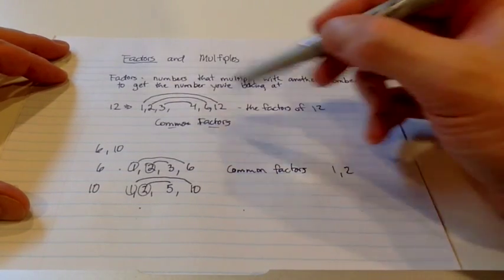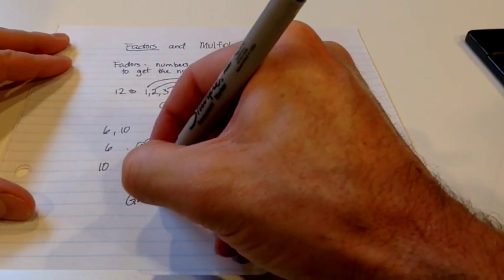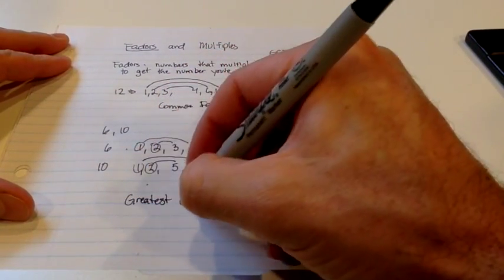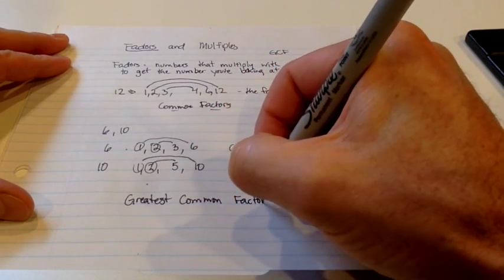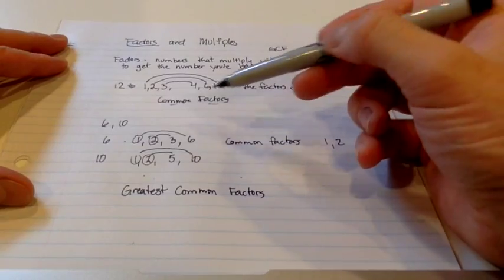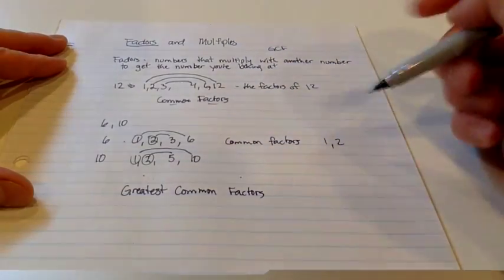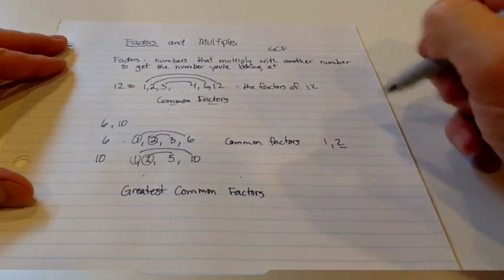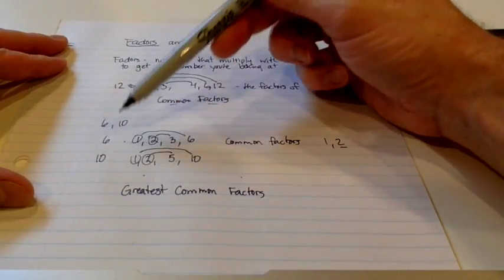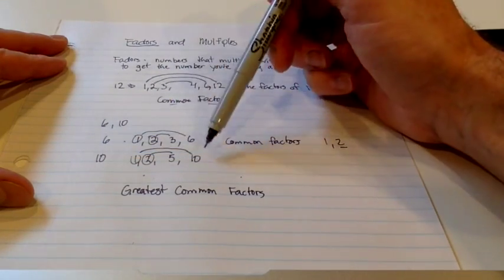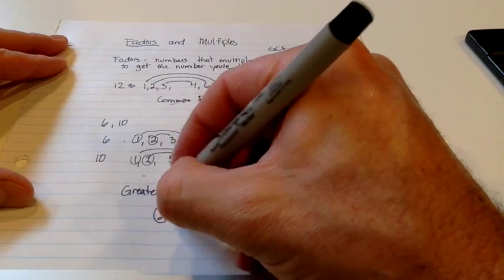Most of the time when we're talking about common factors, we're talking about greatest common factors. And all that means is when we look at the common factors, which of them is the biggest number, the greatest of them. And of the numbers that are in common between 6 and 10, of all of these factors, the greatest common factor, in this case, is 2.